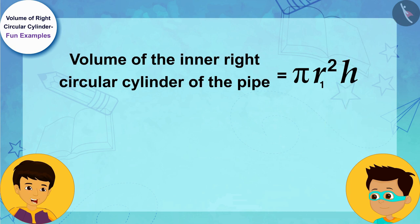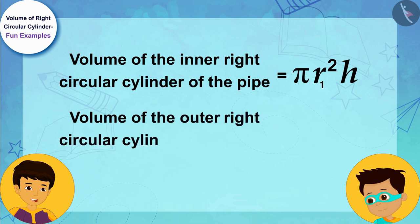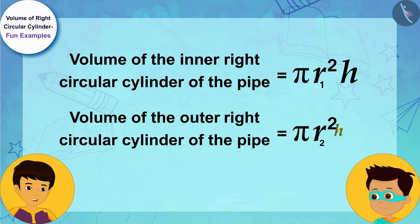And we can write the volume of the outer right circular cylinder of the pipe as π r₂² h, where r₂ is the radius of the outer base of the right circular cylinder and h is its height.